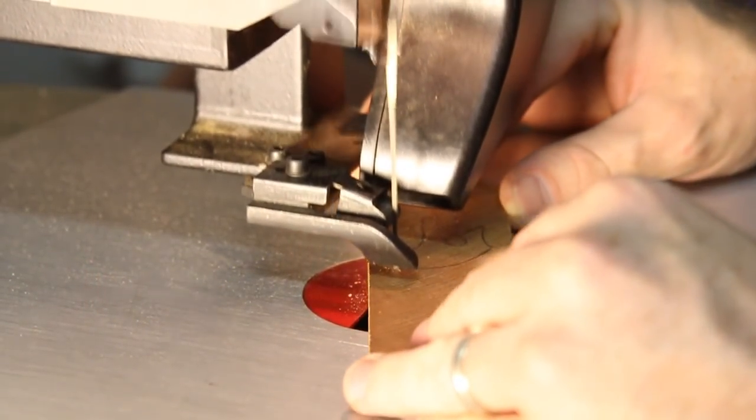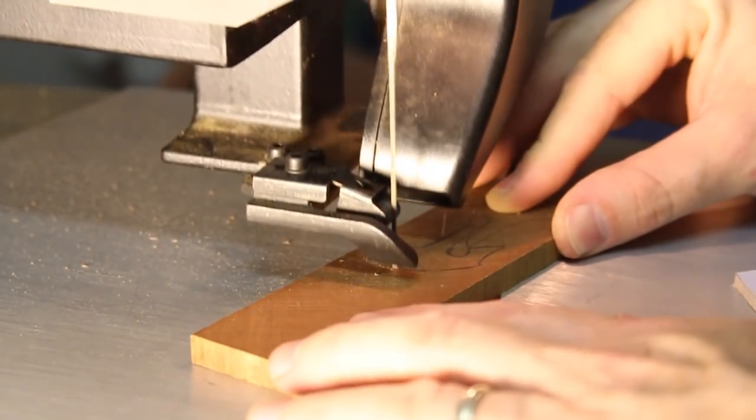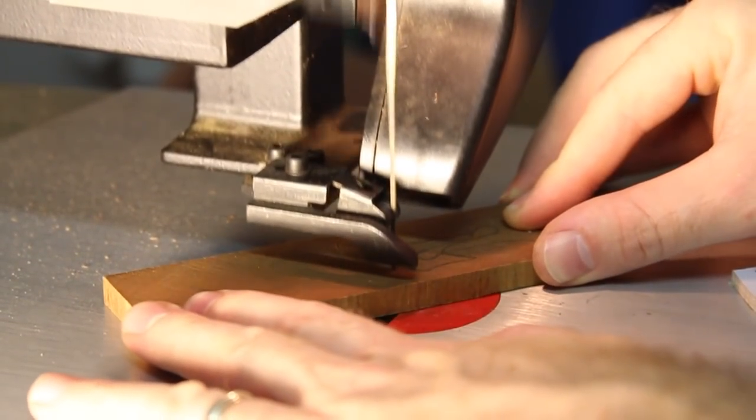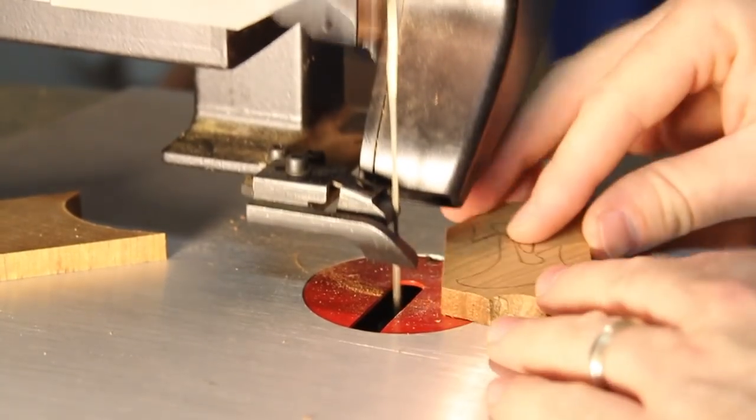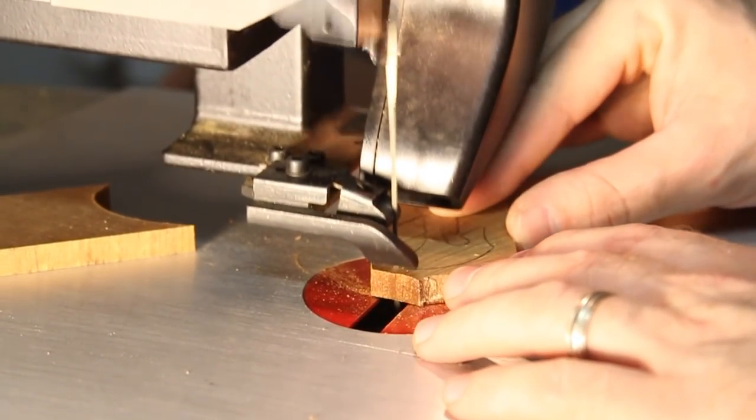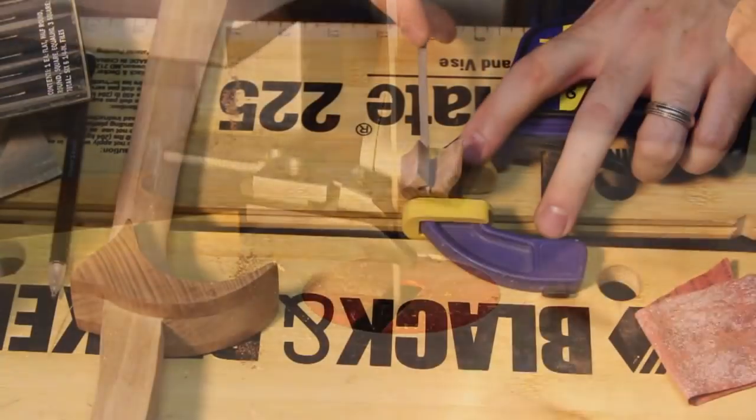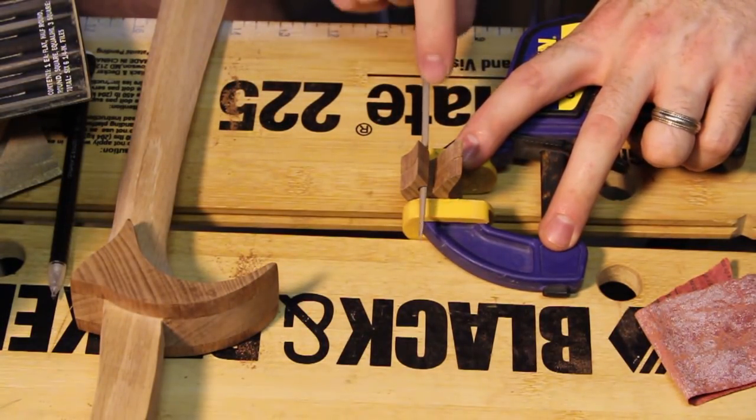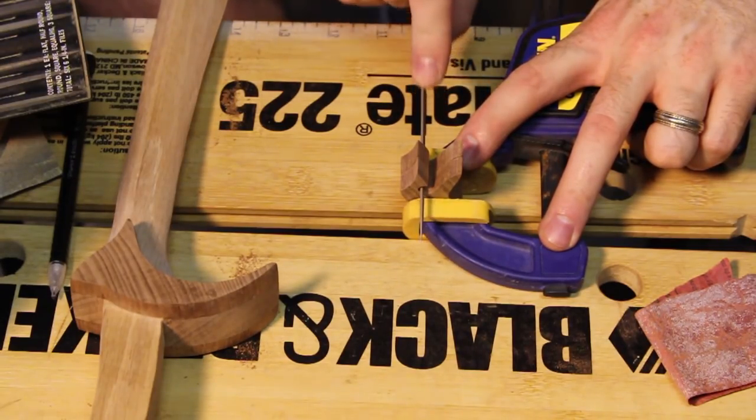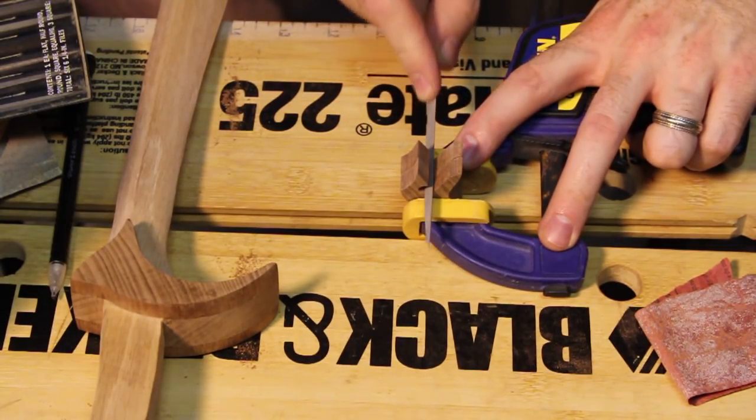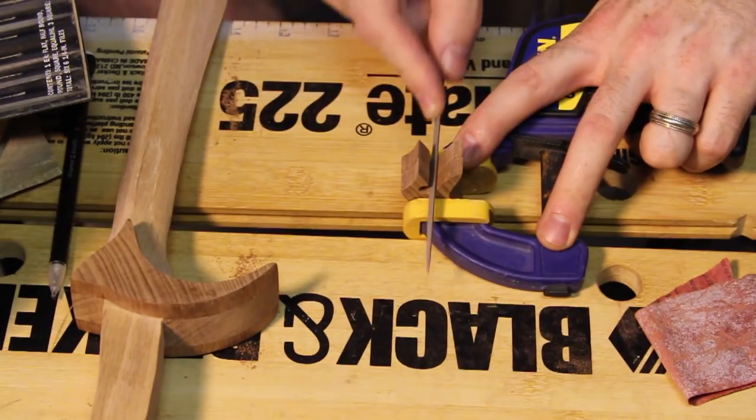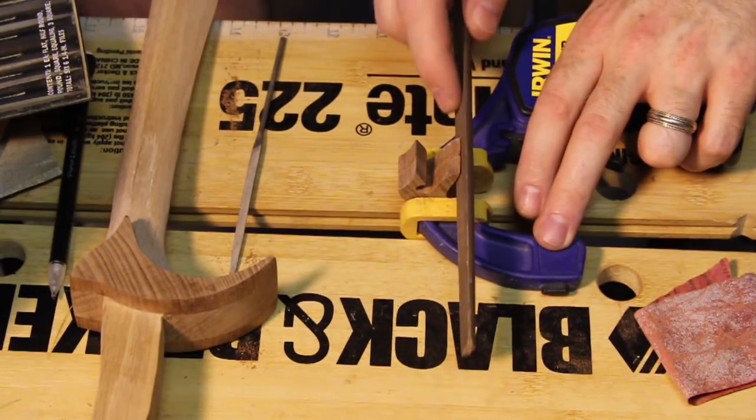I used some more of that end grain mahogany for the pommel guard, and I started by cutting the shapes out on my scroll saw. I clamped the two sides together so that I could use some files to do all the final shaping on the inside. I knew that once these were glued to the sword, it would be really hard to get inside those little spaces.